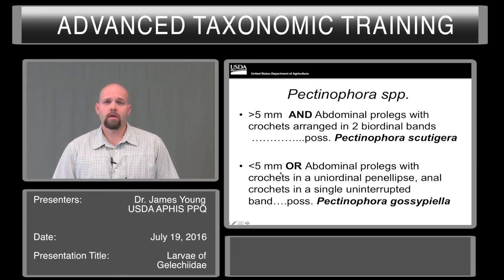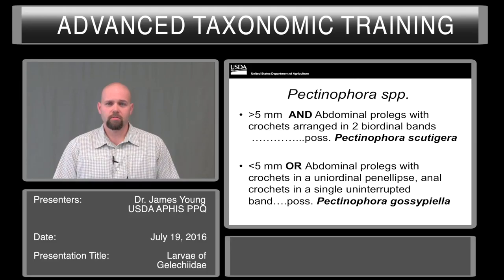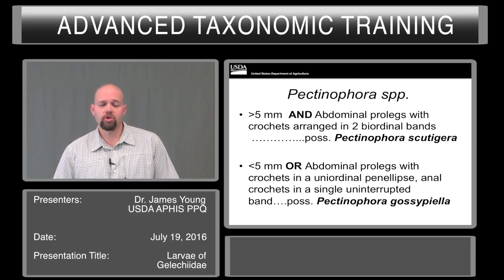...or the abdominal prolegs have the crochets in a uniordinal ellipse, and the anal crochets are in a single uninterrupted band, it's possibly Gossypiella. Specimens of both of these should be forwarded to a specialist for confirmation.